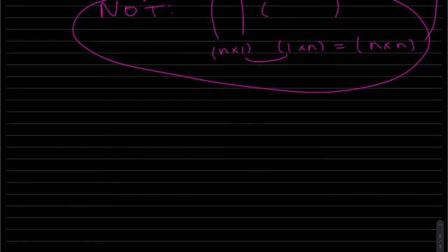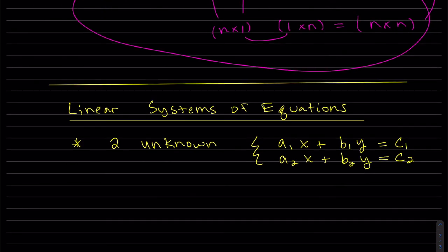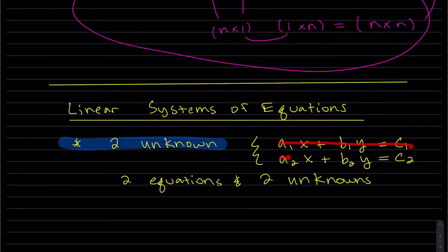So let's look at our linear systems of equations now. Linear systems have two unknowns in R². So here we actually have two equations, two unknowns. Two equations and two unknowns, x and y.